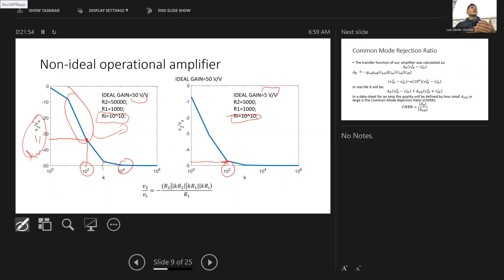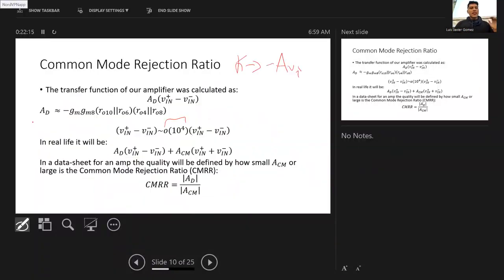The way we do math with these things is assuming that the gain is infinite, and so when we buy these things, we have to be cognizant that the gain is actually not infinite. When we design the circuits, we want to make sure that the gain we're trying to get is a lot smaller than the actual gain of the amplifier.